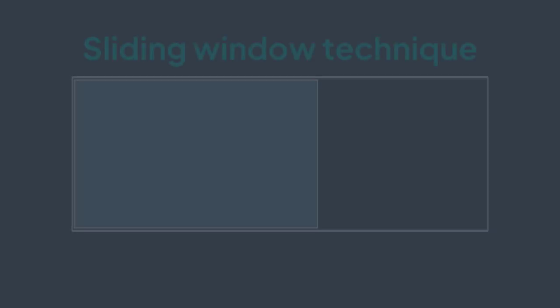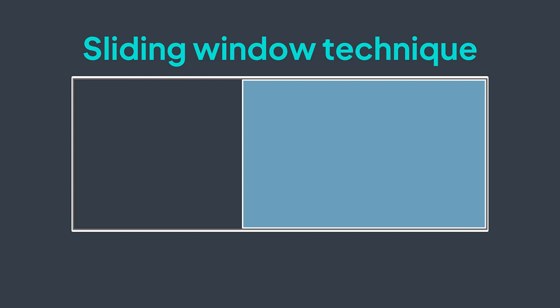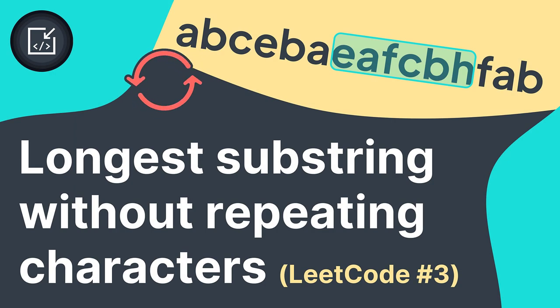In the previous video, we learned about sliding window, a problem-solving technique that works by maintaining a window that represents a contiguous part of the data. In this video, we will use it to solve a popular coding problem: longest substring without repeating characters.